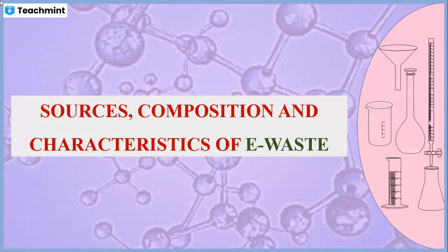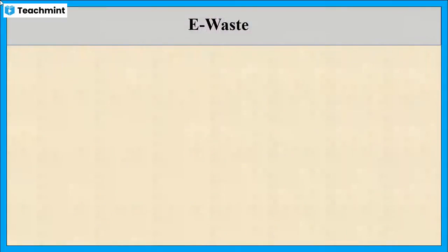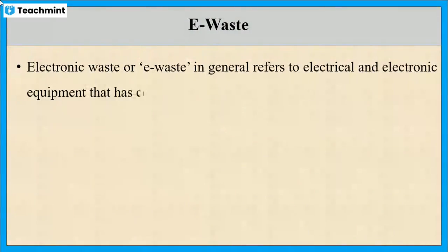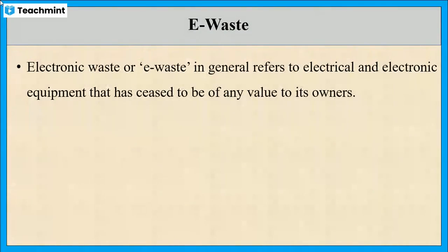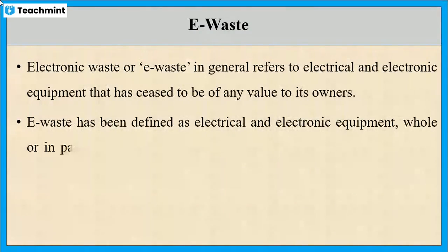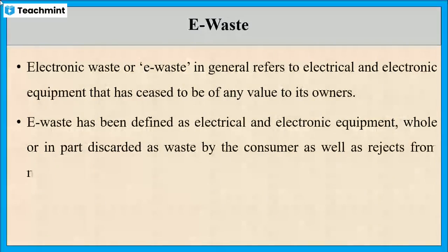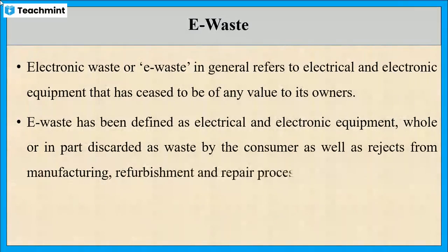In this session, let us discuss about sources, composition, and characteristics of e-waste. Any electrical and electronic product that has been discarded is considered as electronic waste, or in short, it is referred to as e-waste. E-waste is defined as electrical and electronic equipment discarded as waste by the consumer, or any electrical and electronic product rejects from manufacturing, renovation, and repair processes.